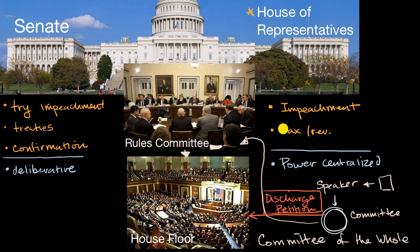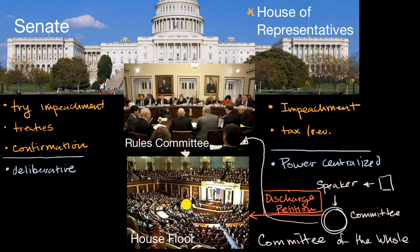The big picture here, beyond the constitutional powers given to the House or the Senate, is that in general the House of Representatives is much more hierarchical — the power is centralized, especially within the majority party. Because of that centralized power, it allows the House to get bills moving much faster, especially once they go to the House floor. You don't have the notion of a filibuster or needing a supermajority in order to actually get a vote and get something passed.